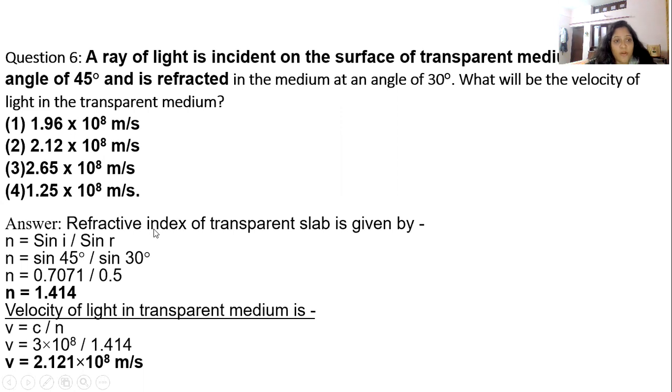As we all know, the formula for refractive index is sin i / sin r. As per the question, sin i is 45° and sin r is 30°. Put the value of sin 45 and sin 30. We will get 0.7071 / 0.5. Refractive index will be 1.414.